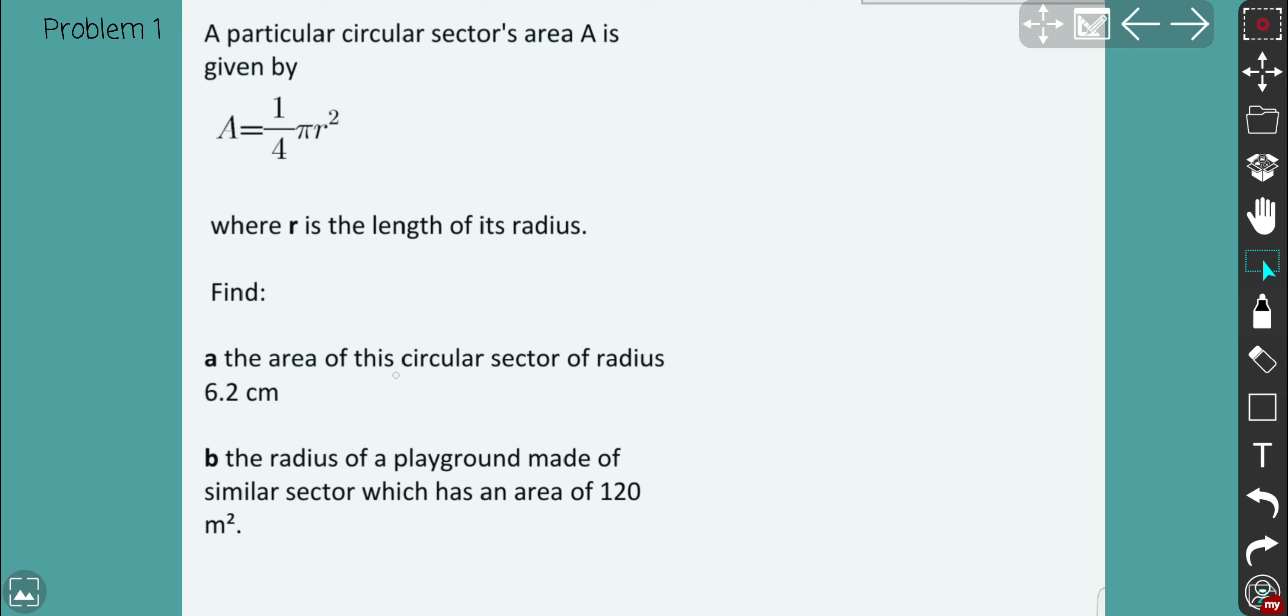All right, so you need to find the area of the circular sector of the radius 6.2 centimeters and part B you need to find the radius of the playground made of similar sector which has an area of 120 meters squared. There are two questions and you can go by around then compare with my explanation. So we start doing that.